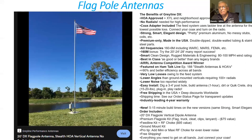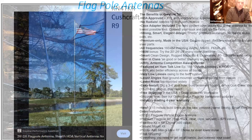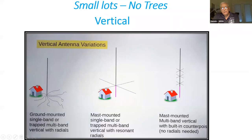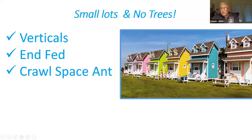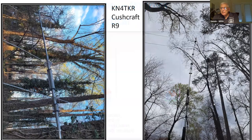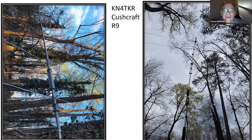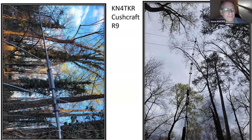You might mention the difference between radials versus elevated, where you don't require as many radials. You can see the radials on the ground-mounted antenna. The mast-mounted antennas could be trapped or could also use radials. Steve confirmed this Cushcraft R9 uses no radials. So there are variations on these verticals, which makes them nice.